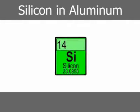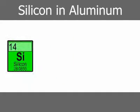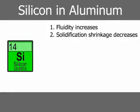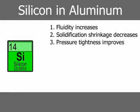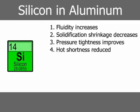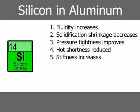As silicon content in aluminum alloys approaches 11.7%, fluidity of the liquid metal increases, solidification shrinkage decreases, pressure tightness improves, hot shortness — or tendency to crack or tear during solidification — is reduced, and modulus of elasticity, or stiffness, increases.